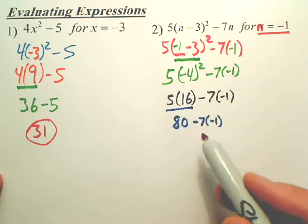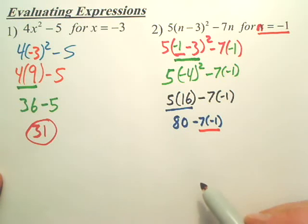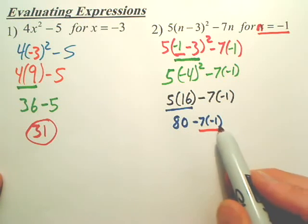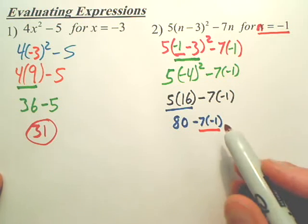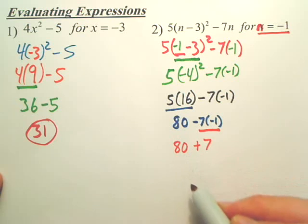Now we still have a multiplication. We have to do multiply and divide. We're not done multiplying and dividing from left to right. So we now multiply these two. That's negative 7 times negative 1. That is a positive 7. Bring down the 80.